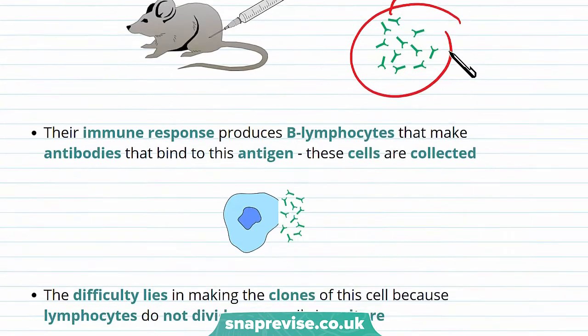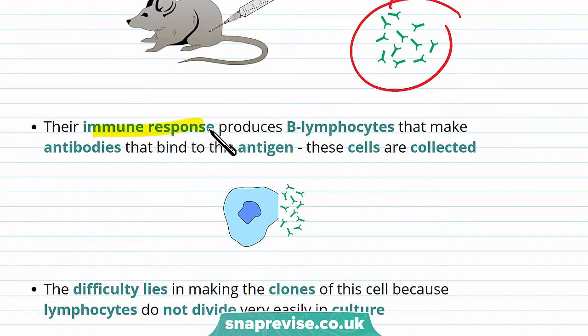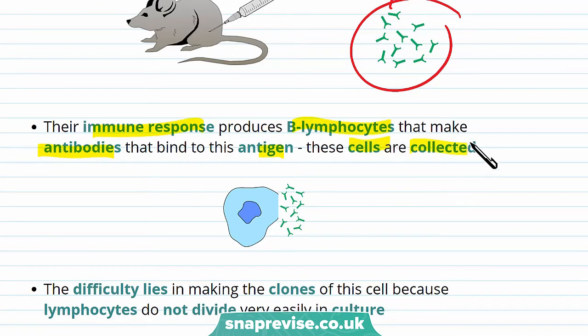The immune response of the mice produces B lymphocytes. These make antibodies that bind to the antigen and these cells are collected.